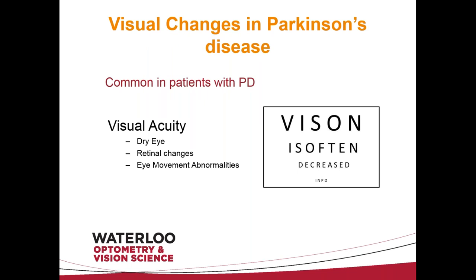Visual acuity is what we measure when we show you the eye chart, and vision is often decreased in PD. Why is visual acuity decreased? It could be because of dry eye, which is common in Parkinson's and can cause reduced vision. There are also retinal changes in Parkinson's disease that can cause reduced vision, and eye movement abnormalities which can also cause reduced vision.